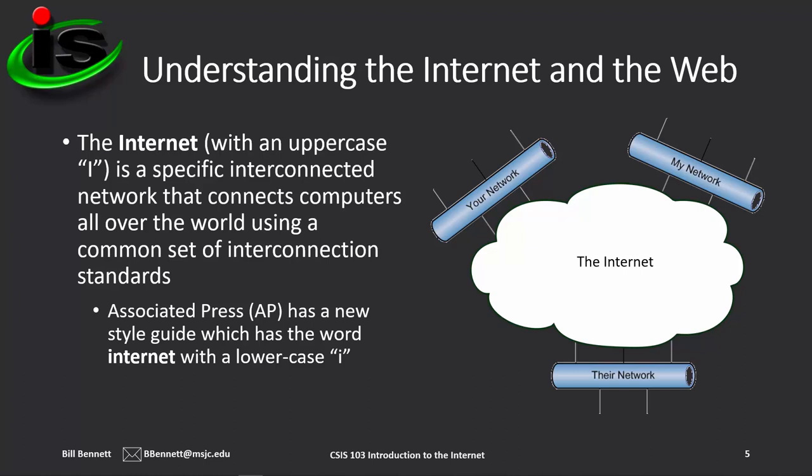When you look at the graphic on the right, the internet is represented by a cloud — you need to think of the cloud as all of the routers and switches and cables, satellites, and all the devices used as the infrastructure to connect the networks together. By the way, the Associated Press has a new style guide out and they have changed the word internet to a lowercase i.